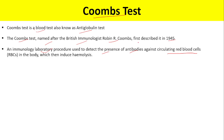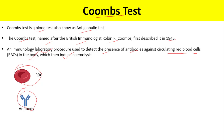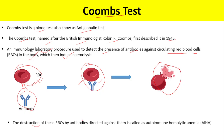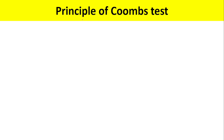The Coombs test is a laboratory procedure used to detect the presence of antibodies that are acting against circulating red blood cells in our body, which can lead to hemolysis. If antibodies act against our red blood cells, they will cause hemolysis. The destruction of RBCs by antibodies directed against red blood cells is known as autoimmune hemolytic anemia.